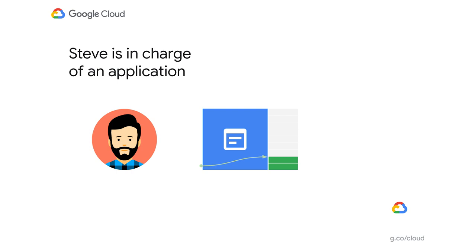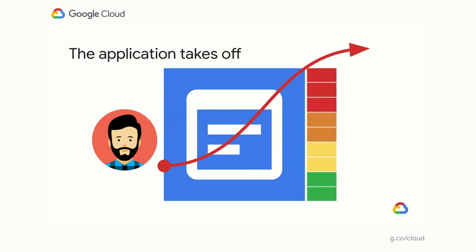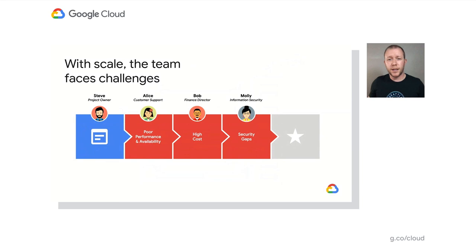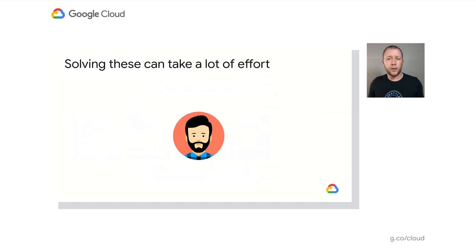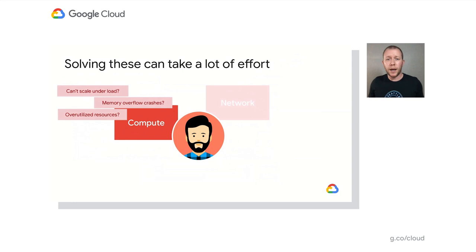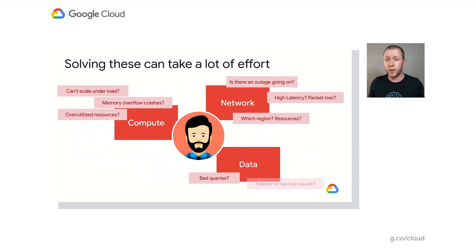He built it for normal times. But now, with people generally at home more, buying patterns changed almost overnight, skyrocketing the traffic to their application. And scale is hard. Steve and his colleagues face a number of challenges with their application's performance, cost, and security. First thing in the morning, he gets a call from Alice, who is in charge of their customer support department. Alice tells Steve they got slammed with customer calls over the weekend, complaining about terrible load times and overall slowness. Is it compute capacity? Or perhaps networking? Or the data infrastructure layer that he knows was architected with some duct tape? Maybe it's not even caused by the cloud infrastructure he's in charge of at all — it could be anything.